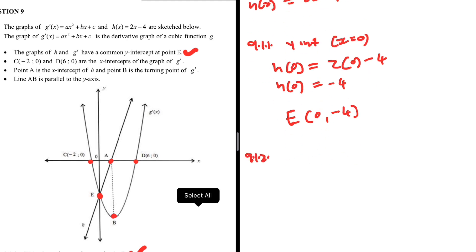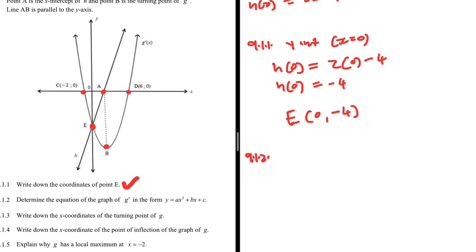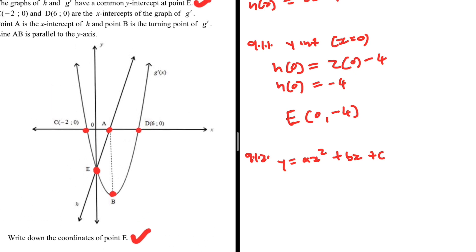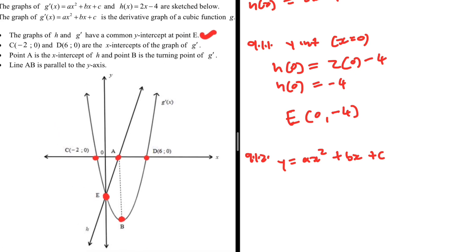Let's look at 9.1.2: write down the equation of G' in the form Y = Ax² + Bx + C. We need to determine G'(x). We are given the X-intercepts C and D, and now we have the coordinates of E. This is a very basic type of equation that you start doing in Grade 11 and continue in Grade 12.